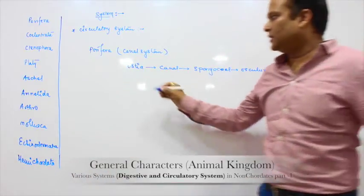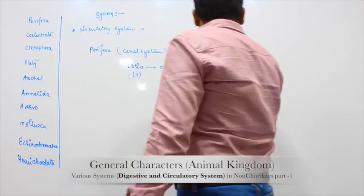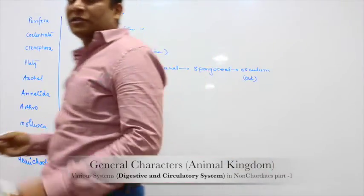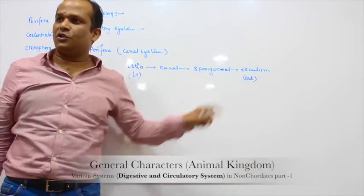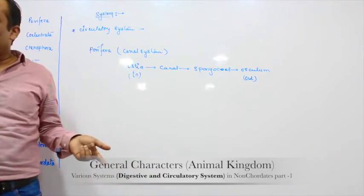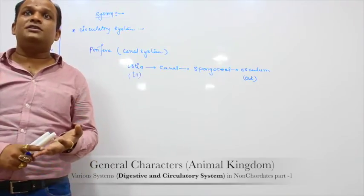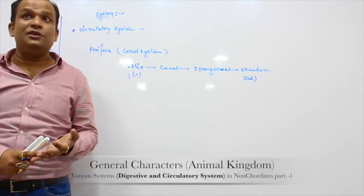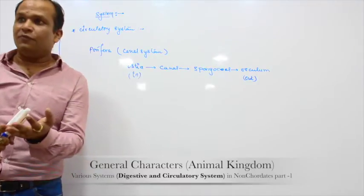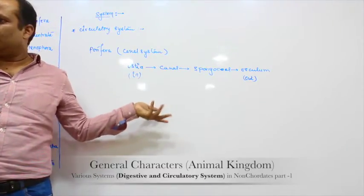In the Porifera canal system, water comes in through the ostia and goes out through the osculum. The inlet is ostia and the outlet is osculum. The food is dissolved gases, and the waste product is waste gases. Clear?